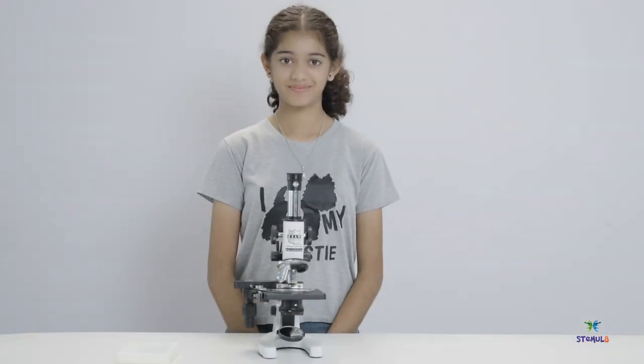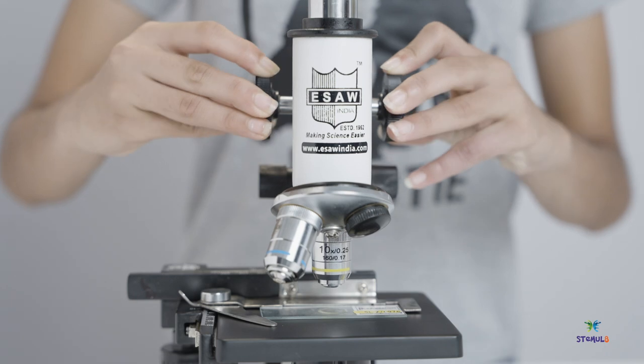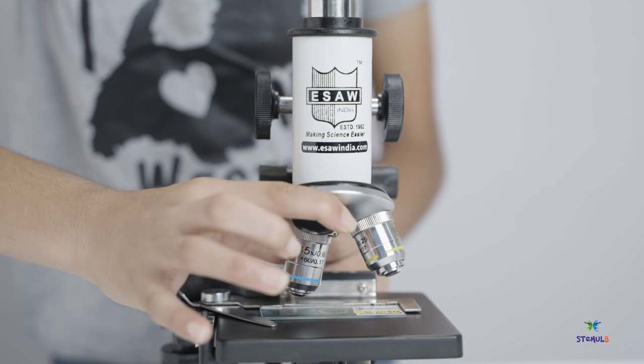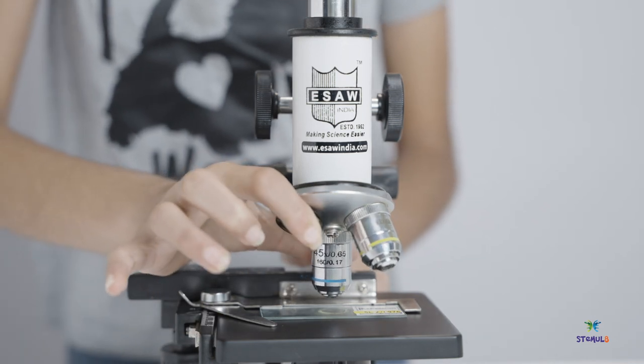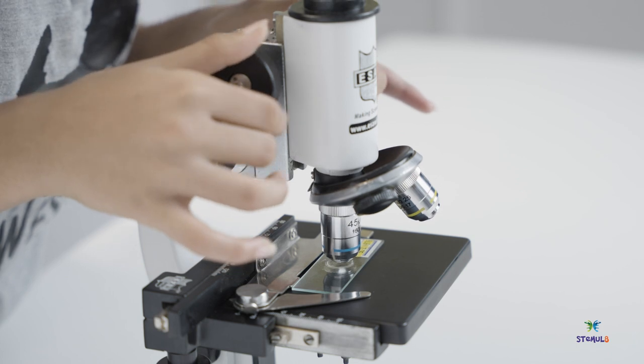You can examine your specimen now. What you have observed now is on a lower power objective. Rotate the nose piece to the next higher magnification and readjust the focus. Now you will be able to observe the specimen with a higher magnification.